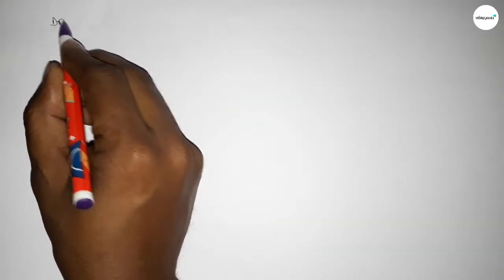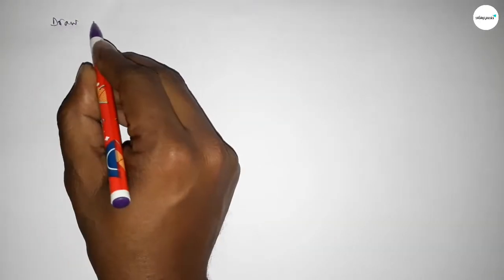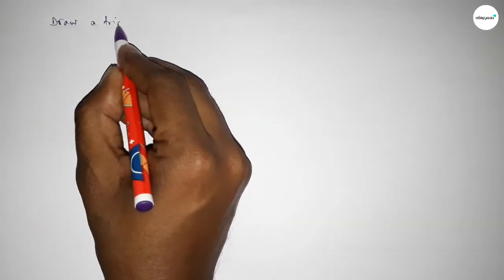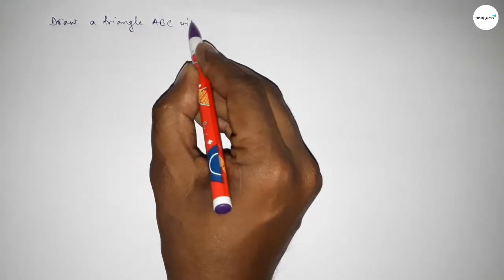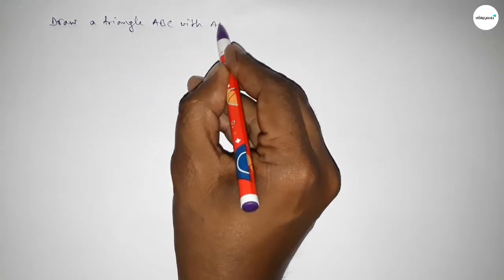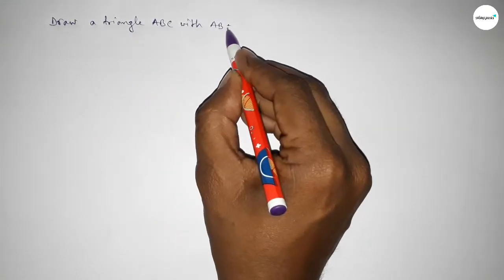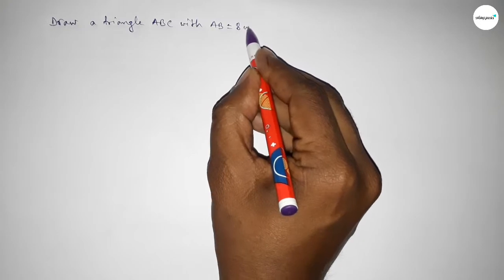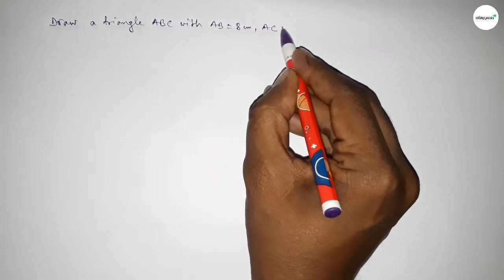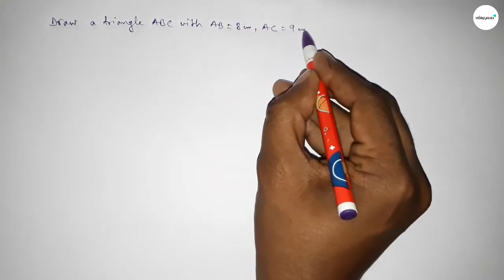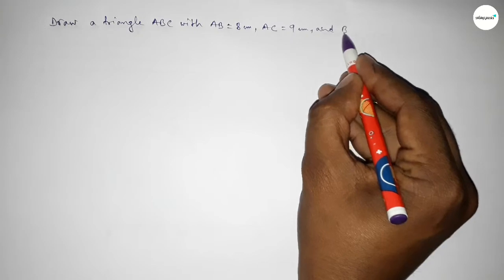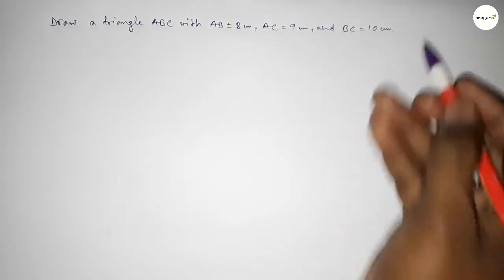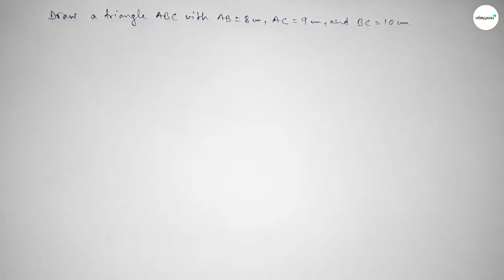Hi everyone, welcome to SI Share Classes. Today in this video we have to draw a triangle with AB equal to 8 centimeters, AC equal to 9 centimeters, and BC equal to 10 centimeters. So let's start the video.